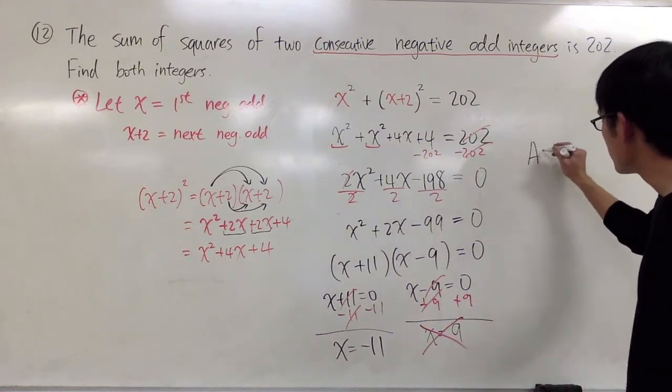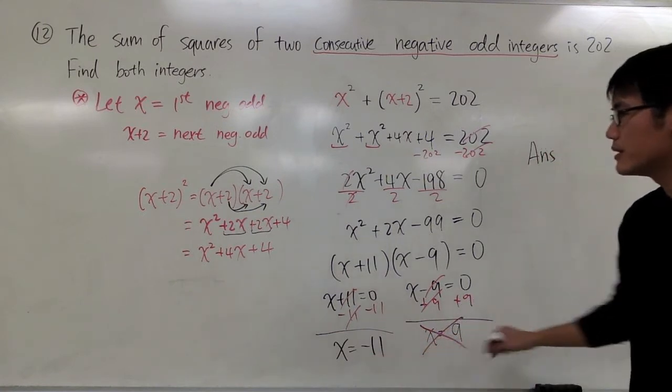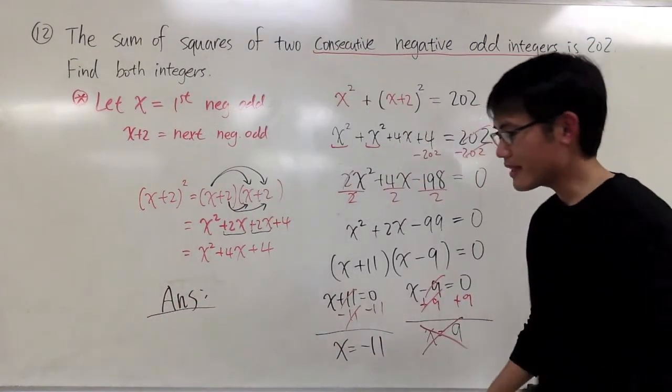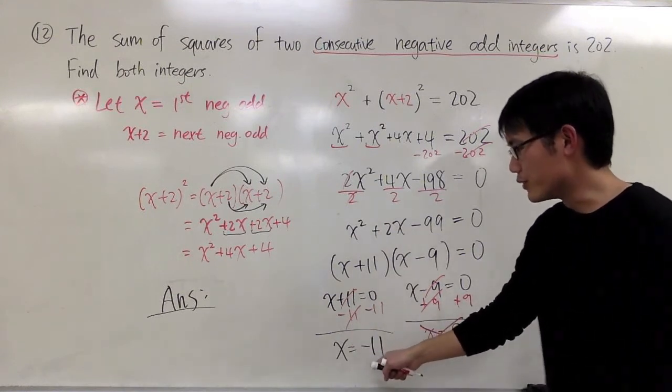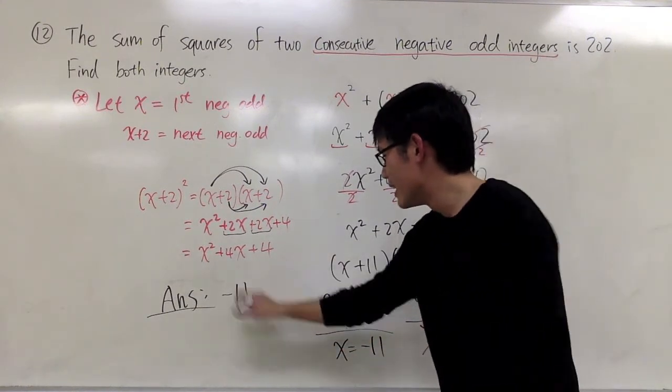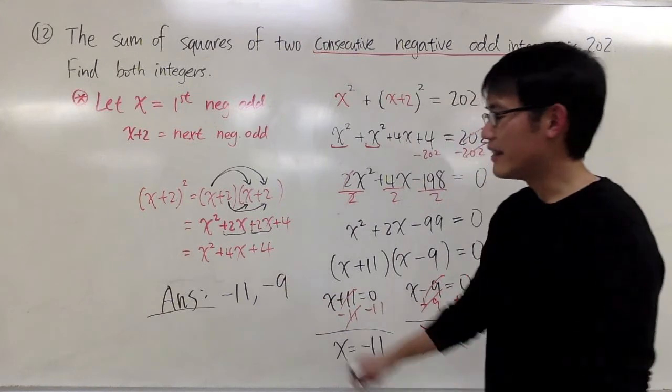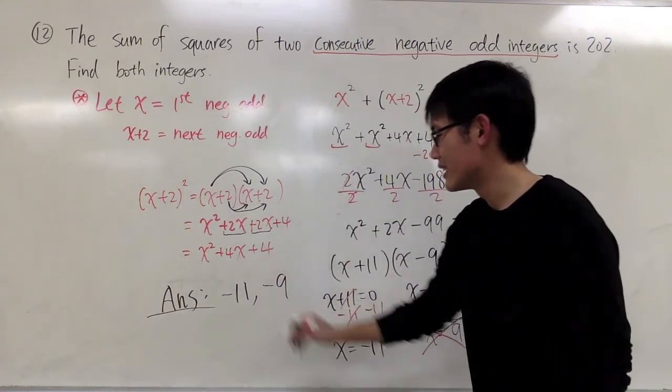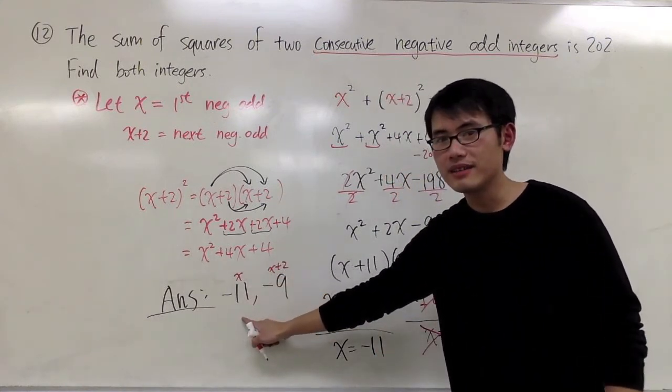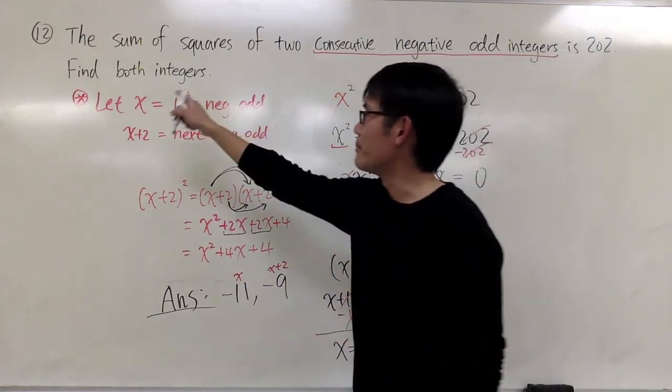So, my answer right here. For my answer right here, x is equal to negative 11 as my first negative odd number. And the next number will be just plus 2 to it. So, negative 11 plus 2 is negative 9. And these are both of the integers that we want. This is x, and this is x plus 2. x is equal to negative 11. The next integer will be negative 9. And that's it. We want to find both integers like that. That's it.